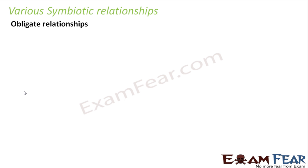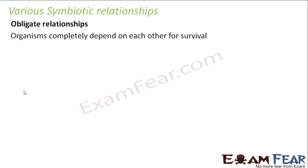Obligation implies compulsion or constraint. An obligate relationship means organisms completely depend on each other for their survival — they cannot live without each other. For example, consider this: you can't survive without food because you completely depend on food for your survival.